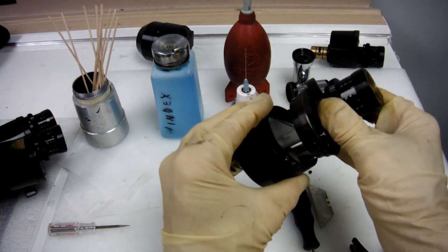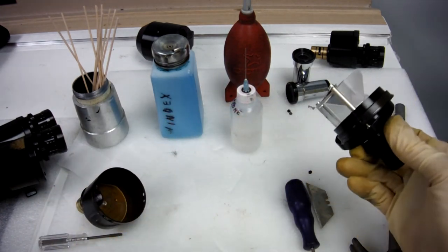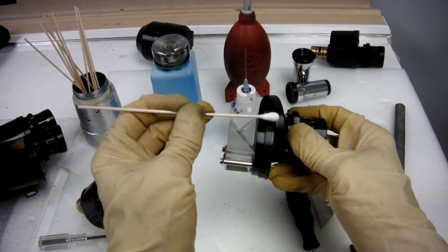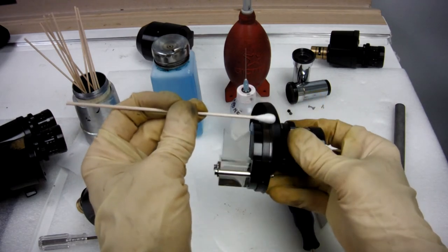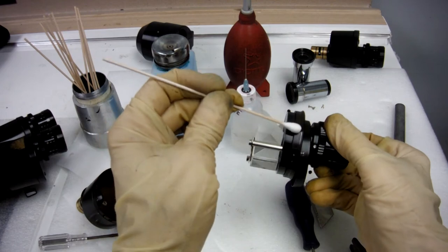Once it's broken loose, you can pull it out. Be sure to clean the residue of Loctite that's around the edges with acetone.